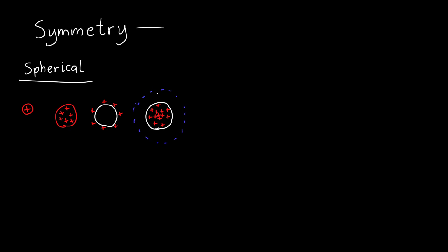All of these are examples of spherical symmetry. We can always choose a spherical Gaussian surface, and the electric field will always point in the same direction as our area vector. Even more importantly, the electric field at a given r has the same magnitude everywhere on that surface — this is the hallmark of spherical symmetry.